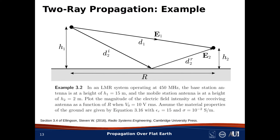Here is an example from the reference shown. In a land mobile radio system operating at 450 MHz — that is, in the UHF band — the base station antenna is at a height H sub 1 of 15 meters, and the mobile station antenna is at a height H sub 2 of 2 meters. We will look at the electric field intensity at the receiving antenna as a function of distance r. We assume very typical ground material properties: a relative permittivity of 15, and a conductivity of 10 to the minus 2 Siemens per meter.